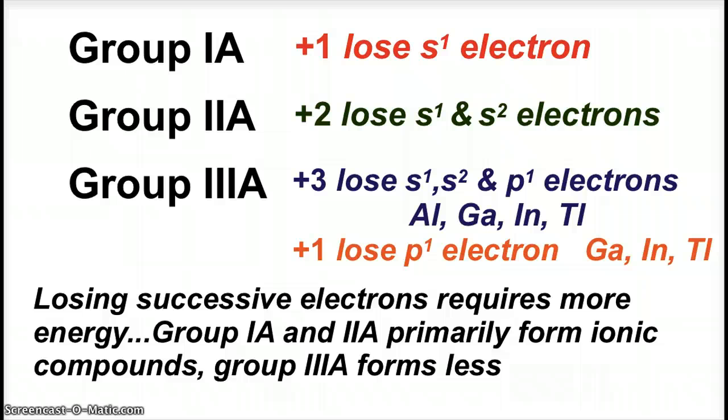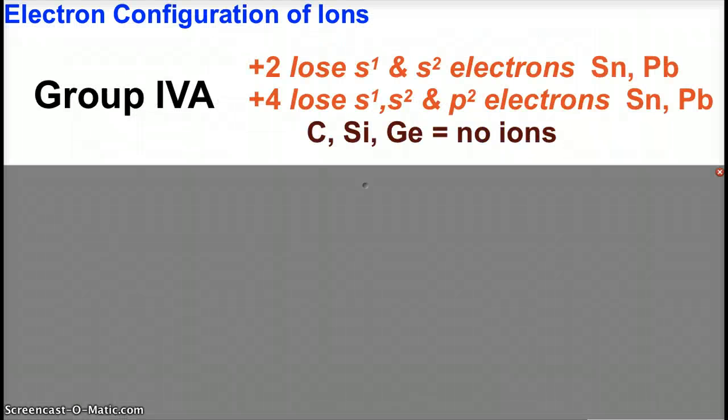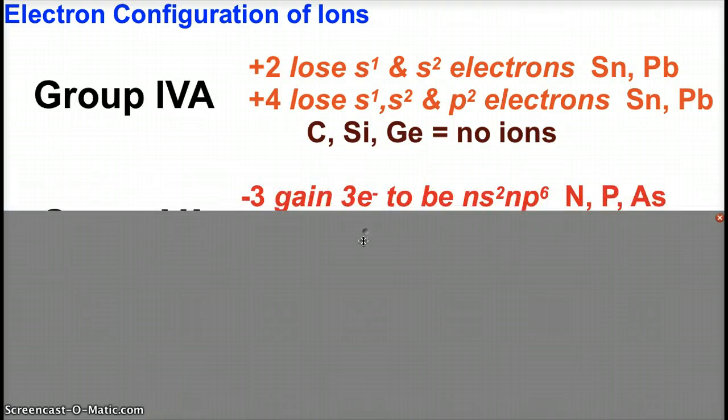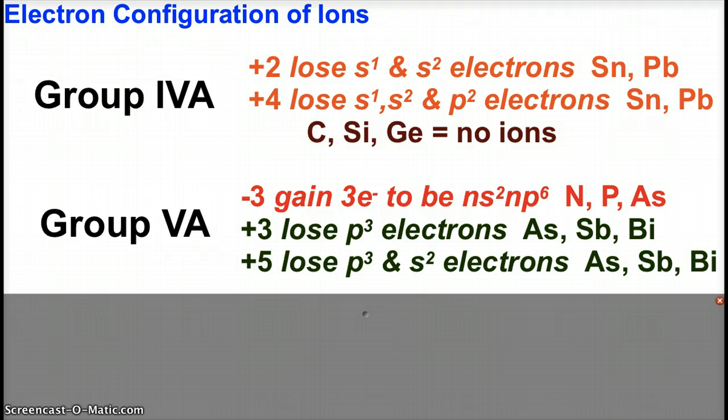We don't see very many plus four or plus five ions except some of our bigger atoms. Moving across the periodic table, Group 4A: tin and lead are metals, bigger elements down at the bottom of the group, and they will form ions. They can form plus two ions by losing just their s electrons. They can also form plus four ions by losing their s and p electrons. Carbon, silicon, and germanium aren't going to form ions for us.